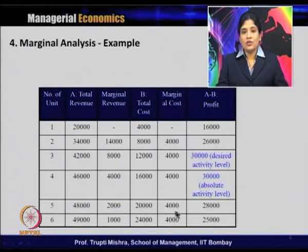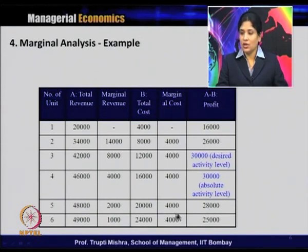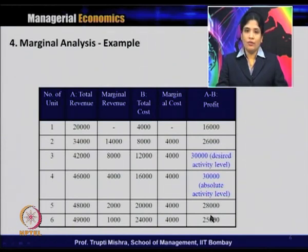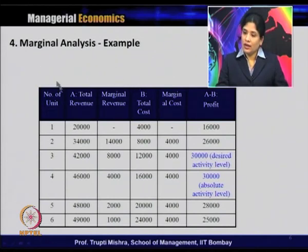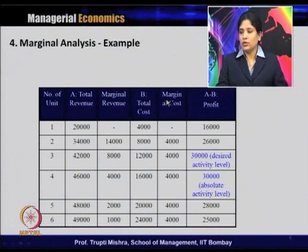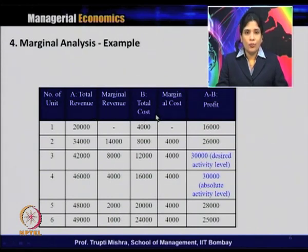Profit for the fifth unit is 48,000 minus 20,000 = 28,000. For the sixth unit, profit is 49,000 minus 24,000 = 25,000. This hypothetical scenario shows that for each level of output we can calculate total revenue, total cost, marginal revenue, marginal cost, and profit as the difference between total revenue and total cost.